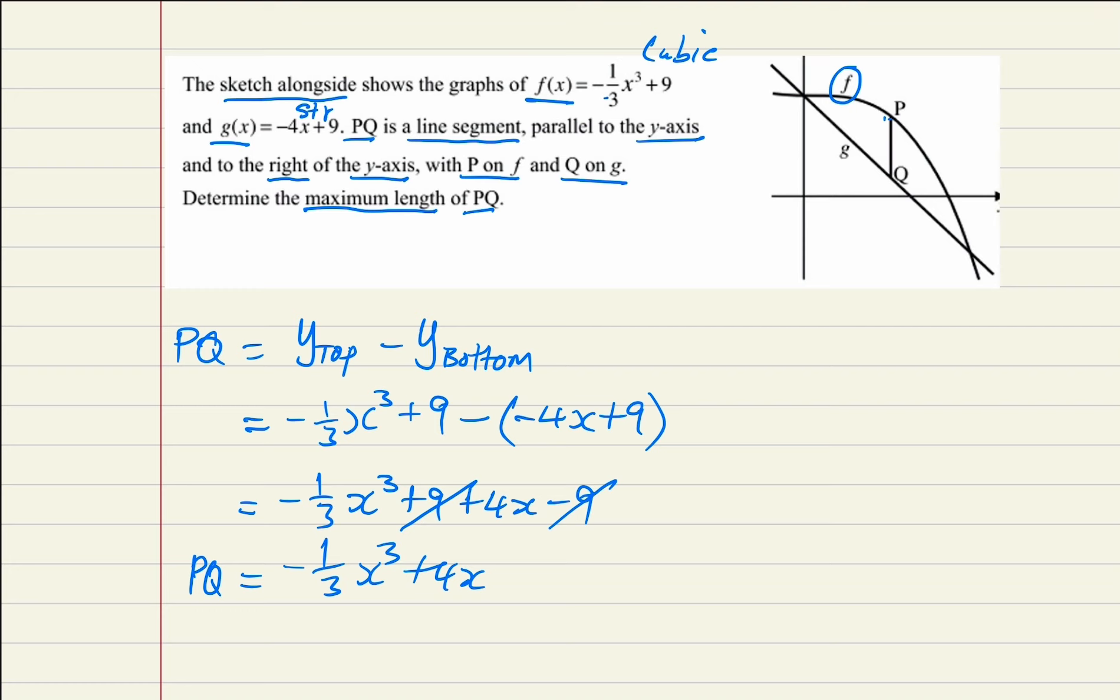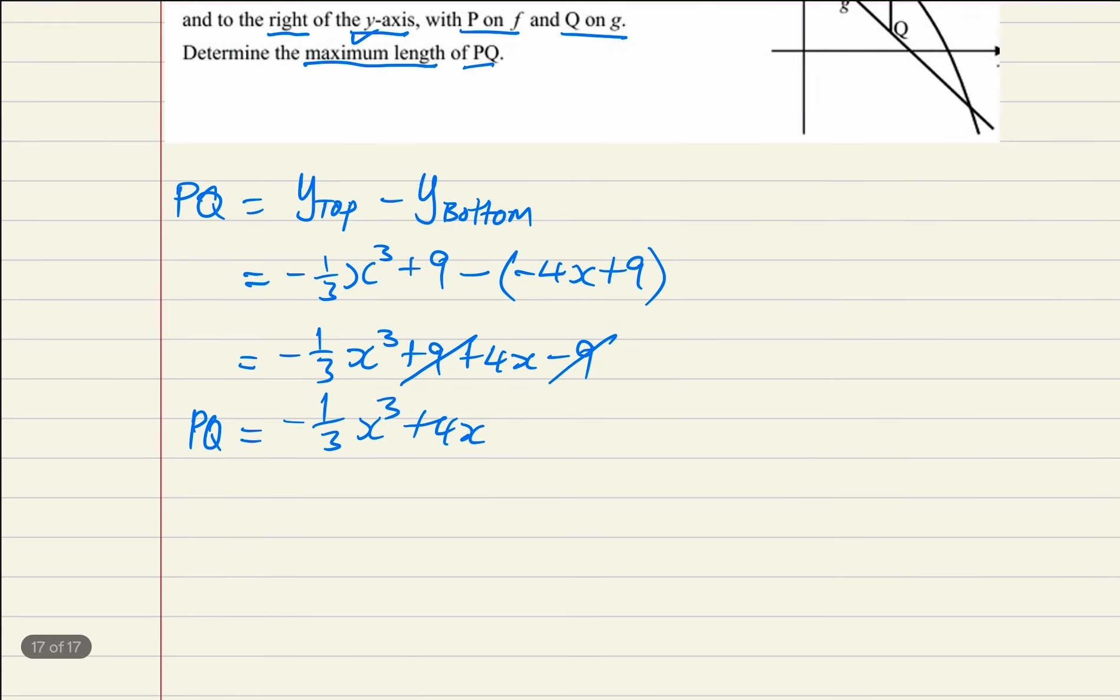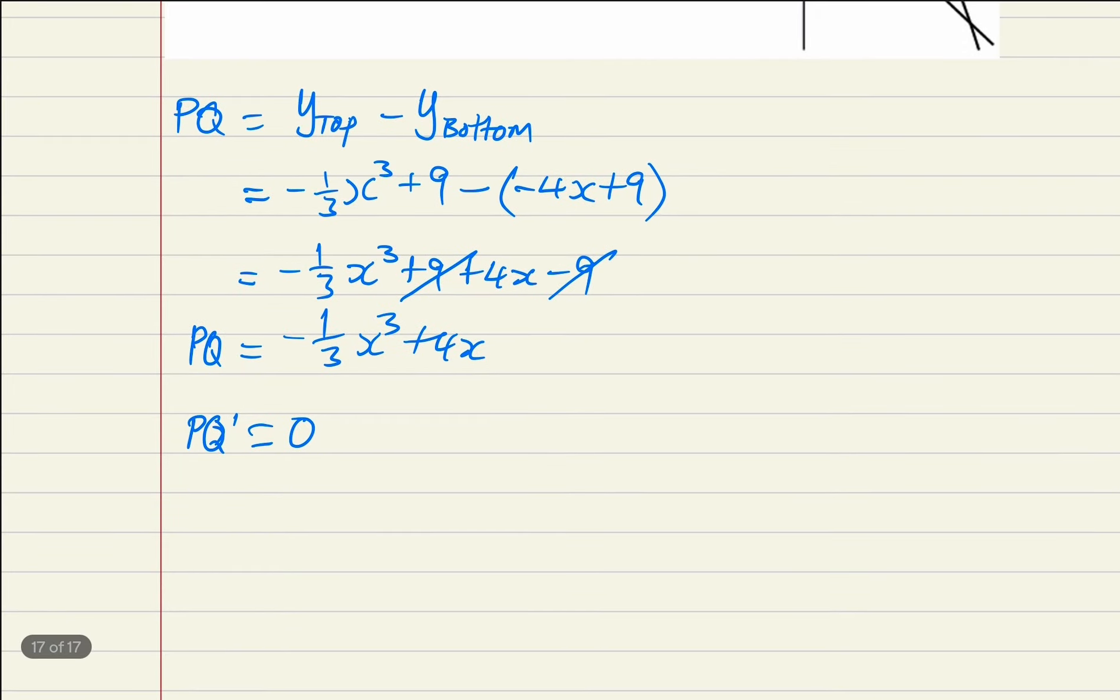But now we are not looking for the length, we are looking for the maximum length. For the maximum length, the first derivative of PQ equals 0. Hence, we are going to derive this. If I derive this, I will have -x² + 4 = 0.